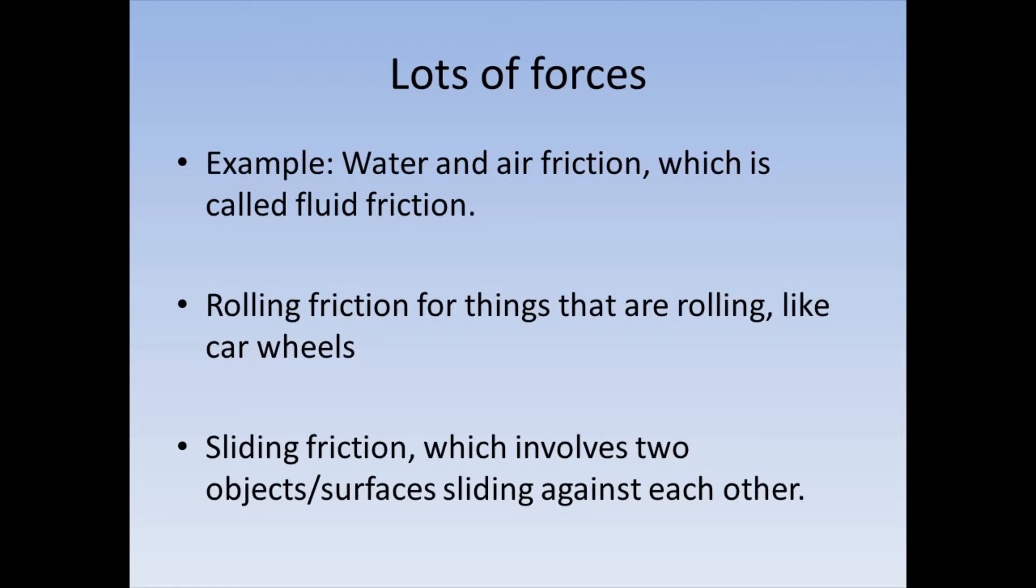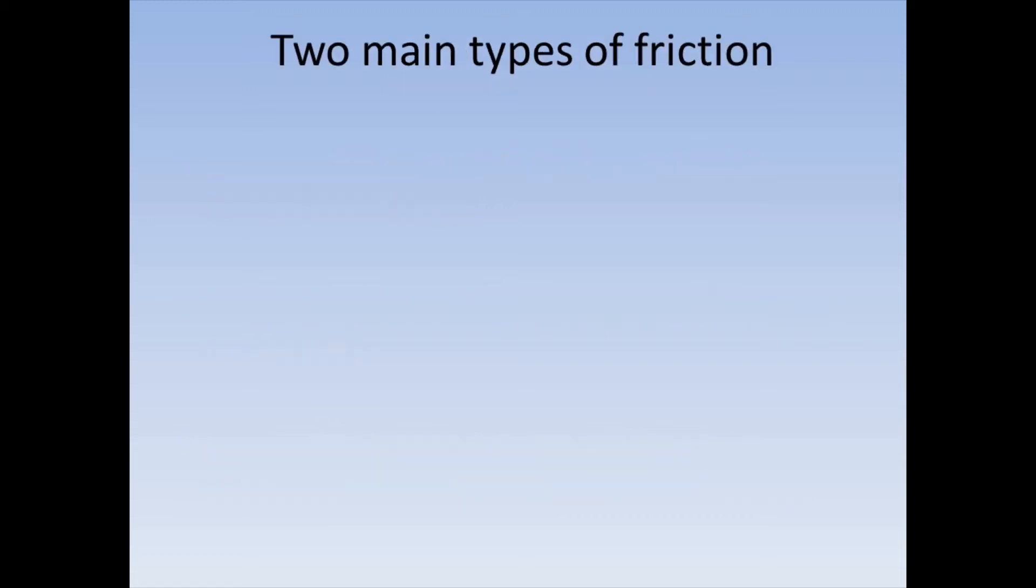There's another type of force that's called rolling friction, so anything that has wheels that are moving, like a car wheel or bikes, or anything else that's rolling like a stone rolling down a hill. Another type of friction would be sliding friction, which involves pretty much any time there's two surfaces that are sliding against each other. Now there's lots and lots of different types of friction, but for our lesson we're really just going to focus on two main types of friction.